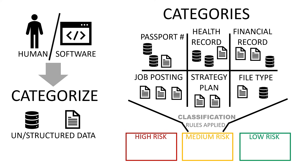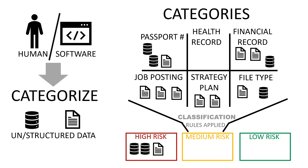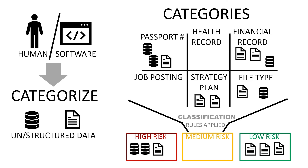For example, regardless of the type of file, if it is categorized as a health record, then that will be classified as high sensitivity. Everything categorized as job postings, on the other hand, would be low sensitivity data. But all job postings that include data categorized under passport number will go up to high sensitivity, and so forth and so on.